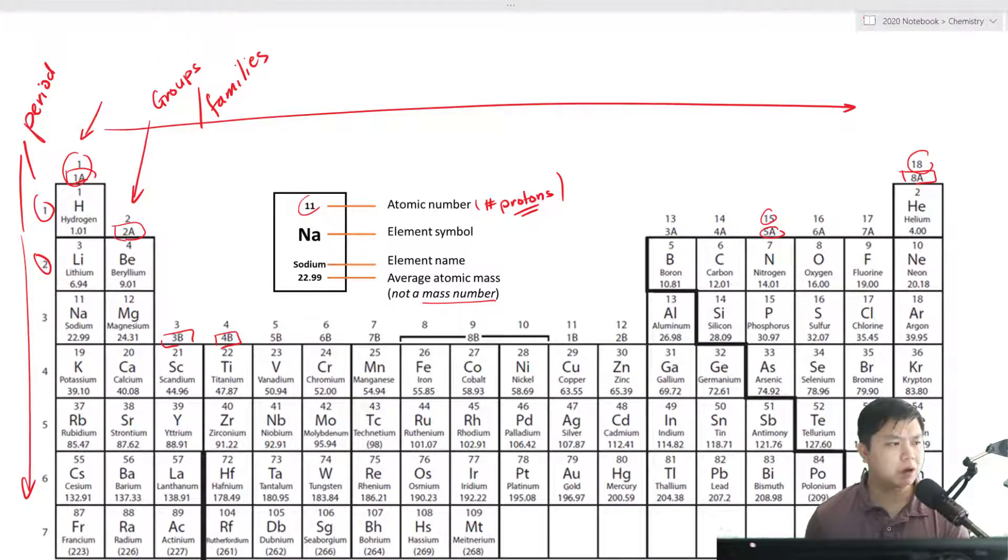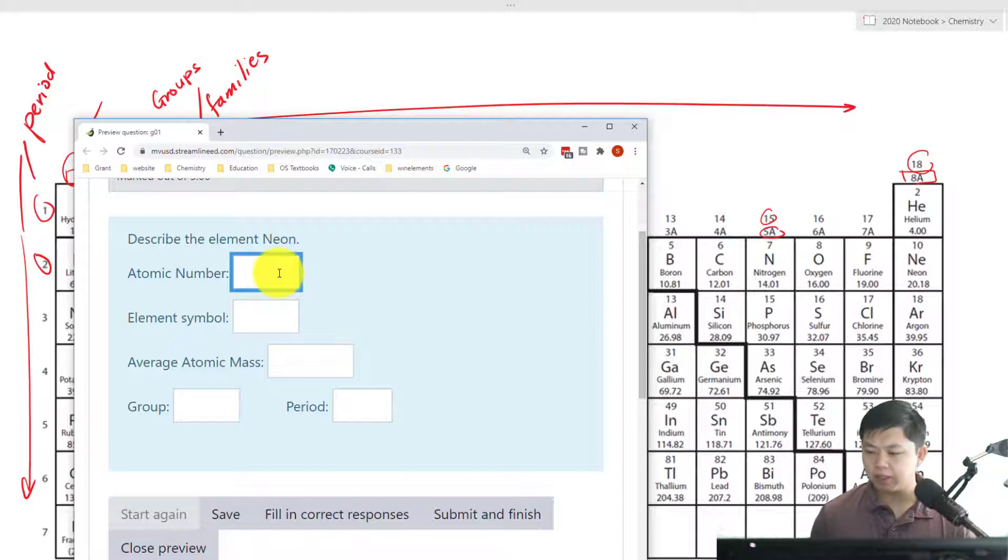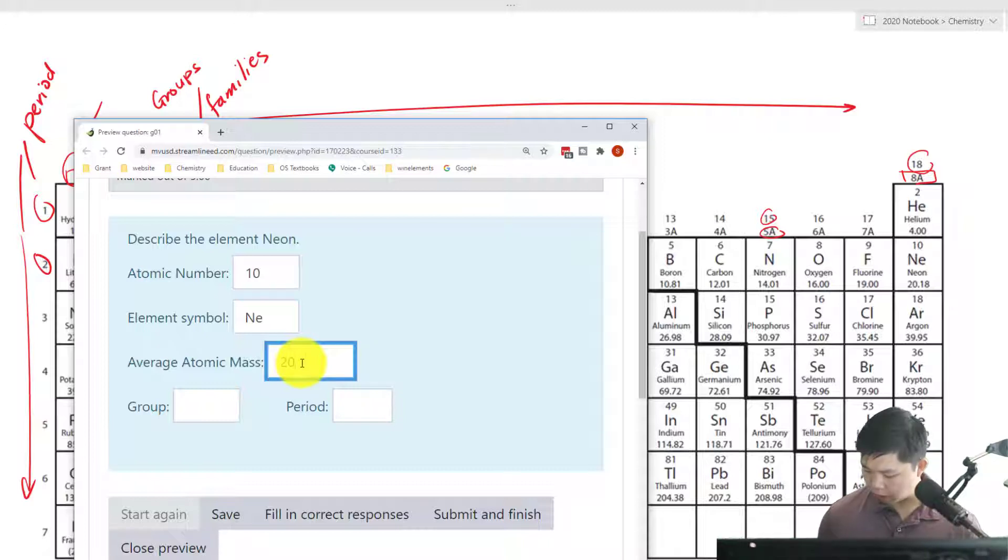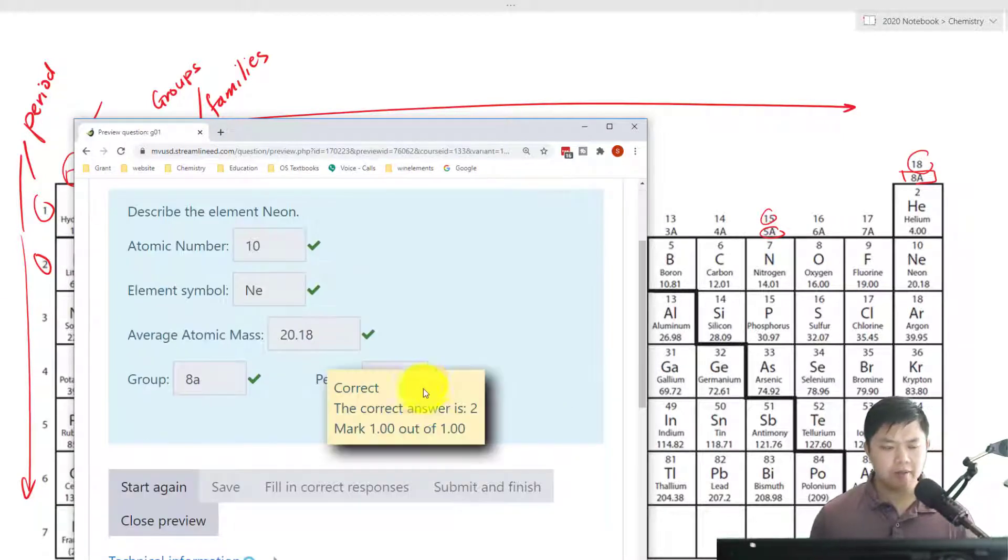Let's do another problem using our autograder quiz. For example, in this case, what do we have? Neon. Neon is right here. So neon has what atomic number? 10. The element symbol is what? Ne—N is capital, E is not. The average atomic mass is 20.18. Then what group is Ne in? Group 8A. And what period is Ne in? Second period, so 2. And then we submit. And there you go—everything is correct.